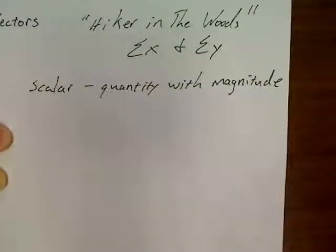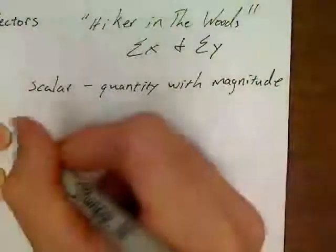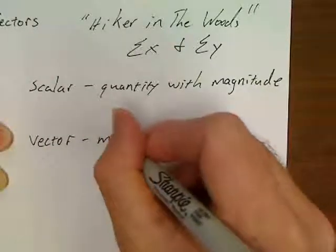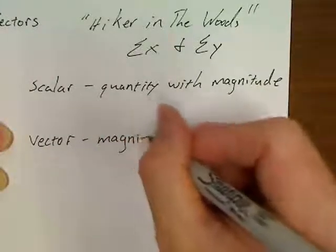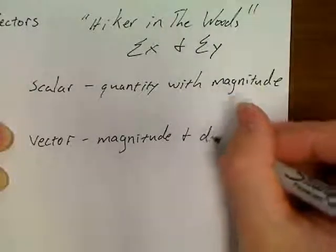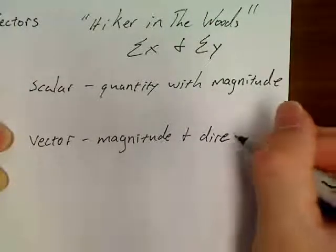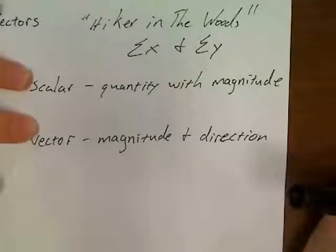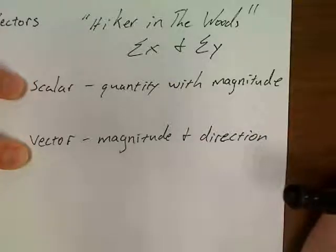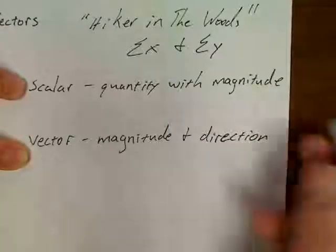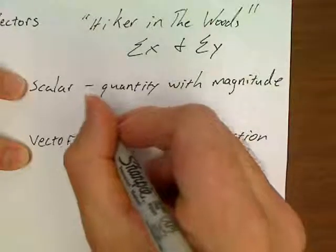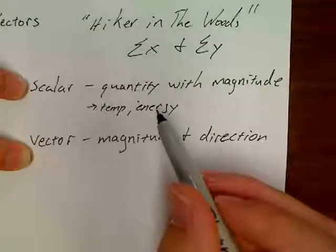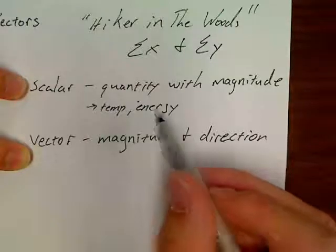The only difference is a vector just means something has magnitude and direction. So there's a difference between these two. Some good examples of scalar quantities are things like temperature, energy. You can't have 15 calories due south.